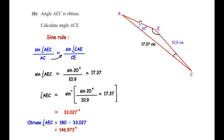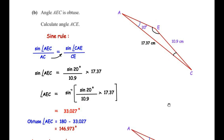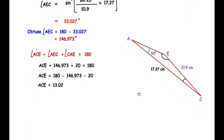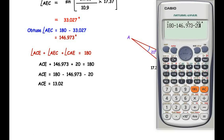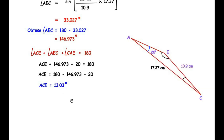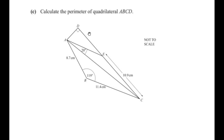Now we use the angle sum property of triangle AEC to find angle ACE. We write: angle ACE + angle AEC + angle A = 180°. So angle ACE + 146.973° + 20° = 180°. Taking the two known angles to the other side: angle ACE = 180° − 146.973° − 20° = 13.027°, which rounds to 13.03°. Note: by mistake 13.02 was written earlier — the correct answer is 13.03°.